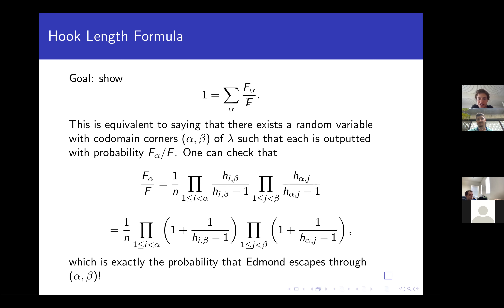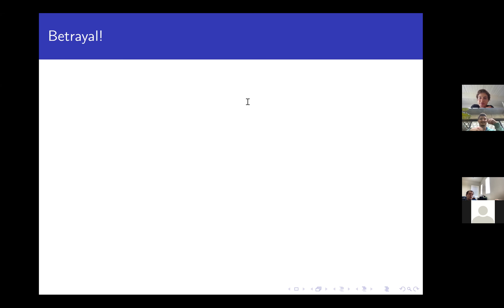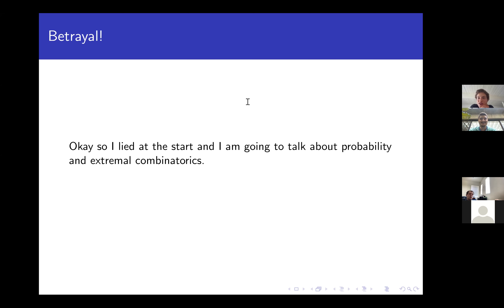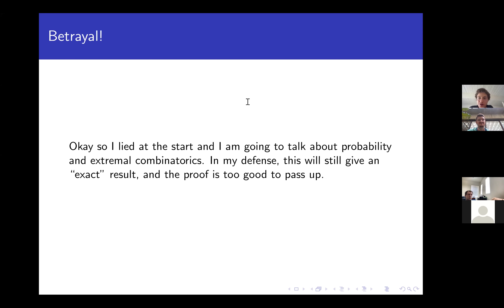So there's a betrayal in this talk — I lied at the beginning, and I'm going to talk about extremal combinatorics. The result we're going to prove is still an exact result in some regard, and the proof is one of my favorites in all of math, so we're going to talk about it.